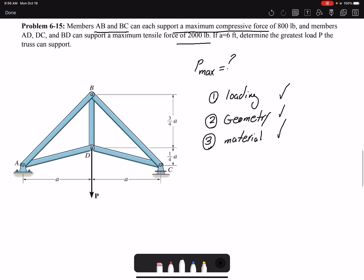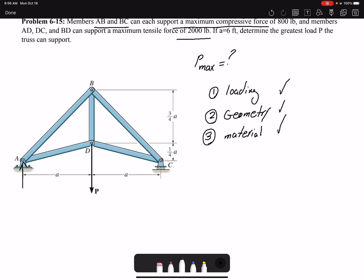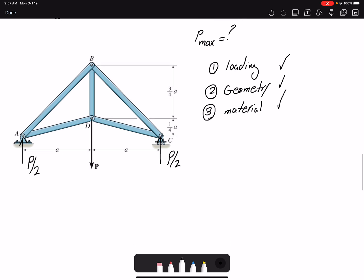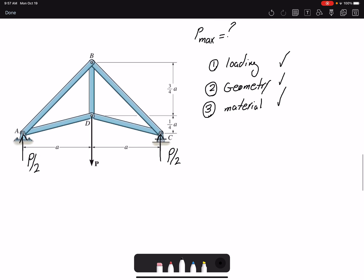If we write an equilibrium equation, we can find the reaction forces. The force P is going to be distributed equally between joint A and joint C. We can find all the forces in each member by analyzing only two joints. Joint A will give me force in member AD and AB. If I analyze joint D, I will get member DC as well as member BD. And we already know the truss is symmetric, so we have the force in member BC as well.